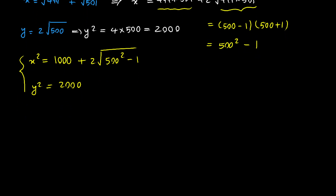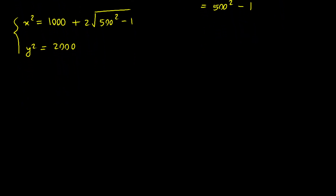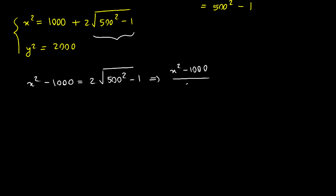We need to use these two equations to compare x with y. I'll isolate the square root term by subtracting 1000 from both sides: x squared minus 1000 equals two times the square root of 500 squared minus one. Then dividing both sides by two gives us: x squared minus 1000 divided by two equals square root of 500 squared minus one.